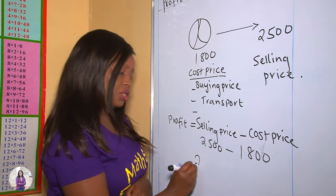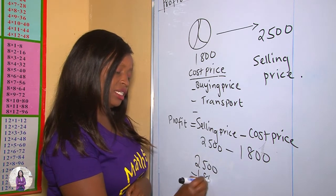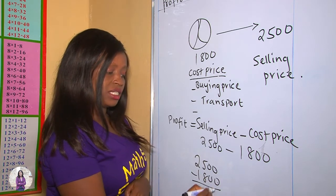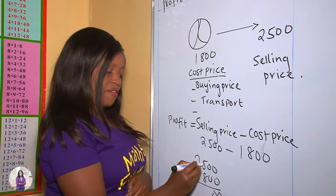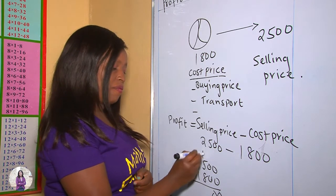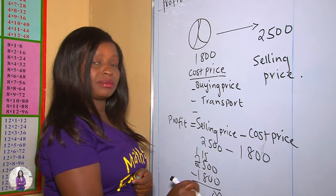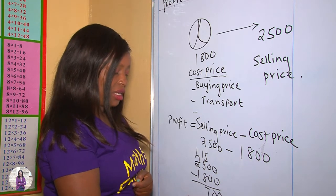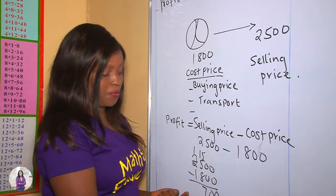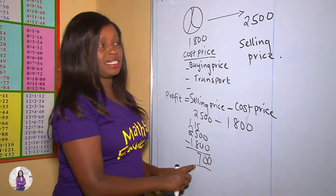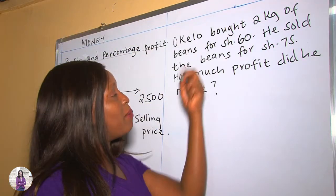So for us to get our profit in this example, it shall be $2,500 take away $1,800. Working through the subtraction: 0 take away 0 is 0, 0 take away 0 is 0, 15 take away 8 is 7, and 1 minus 1 is 0. So the profit he made is $700.